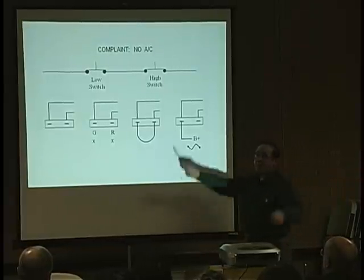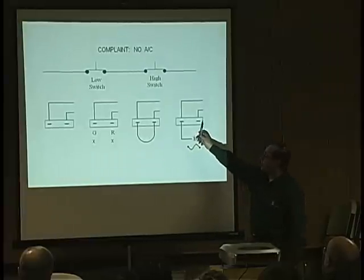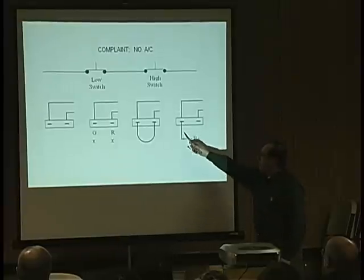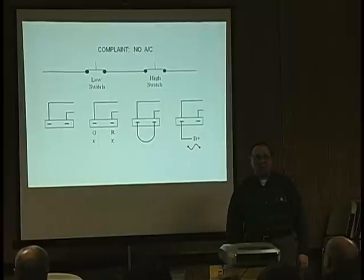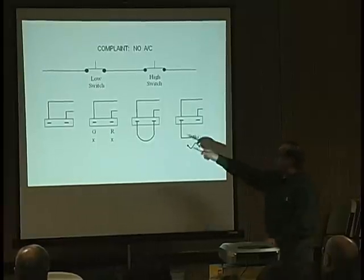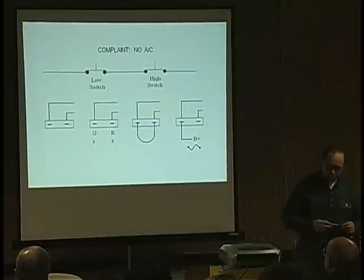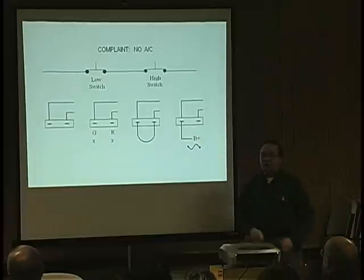He says, well, I've got to power that clutch somehow. So he goes to the switch, the connector of the low pressure switch. But he's a little smarter. He puts a fuse patch lead in. He puts a lead in that has a fuse in it to B+. He doesn't know which one to go to, but when he gets to this one, the fuse blows. He tries disconnecting the clutch, the high pressure switch, different things. Every time he puts power on that, the fuse blows.